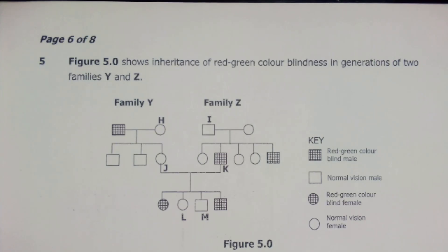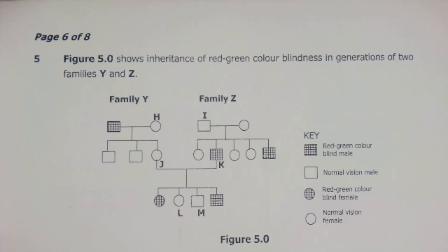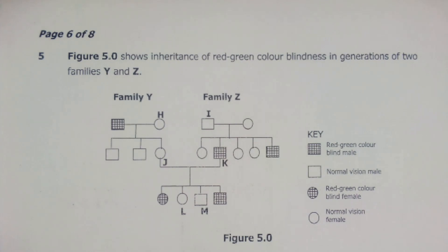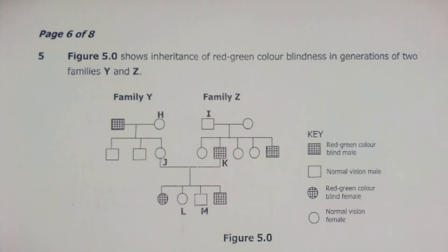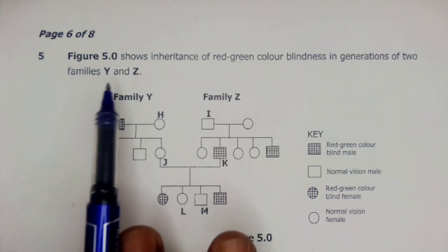Hello everyone and welcome to my channel. In this video, we are going to look at the solutions for question number 5 for biology 2018 GCE examinations. This is question number 5 and it had figure 5.0. We can see that the figure has a pedigree diagram, and the question says figure 5.0 shows inheritance of red-green color blindness in a generation of two families Y and Z.